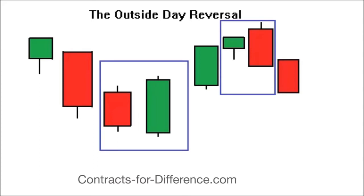But what actually happens is it opens a little bit lower, then it rallies and goes up throughout the day and closes above the previous day's open. That totally eclipses the previous day — that is a reversal day. Day one, sellers were in control. Day two, buyers were so dominant they pushed the price way above what the previous day was. So that would be a good buying signal.